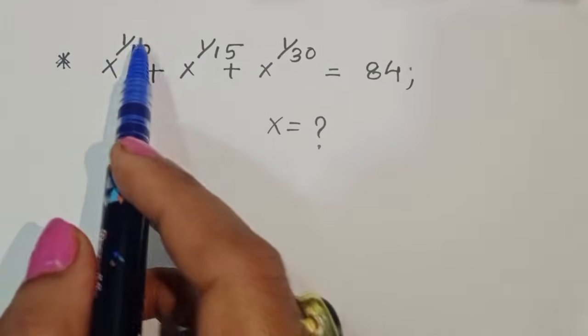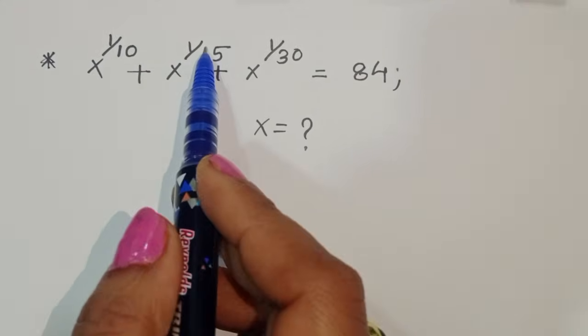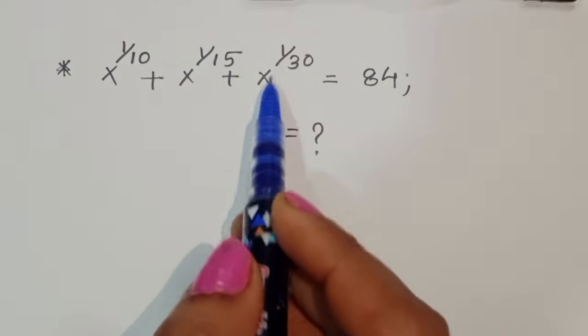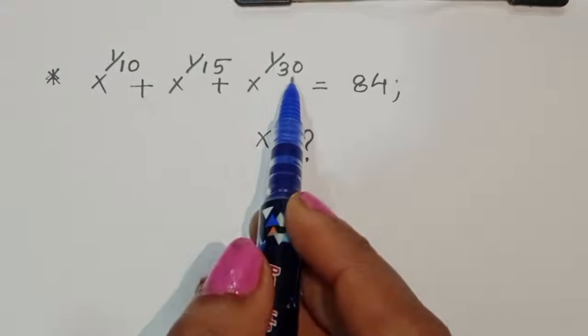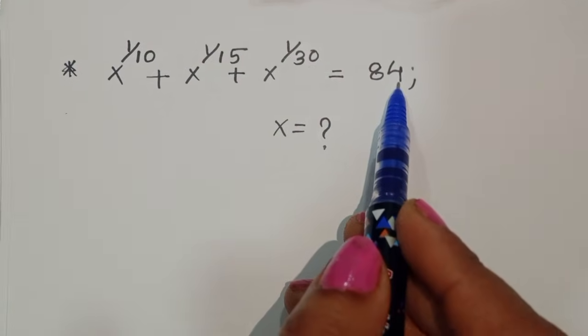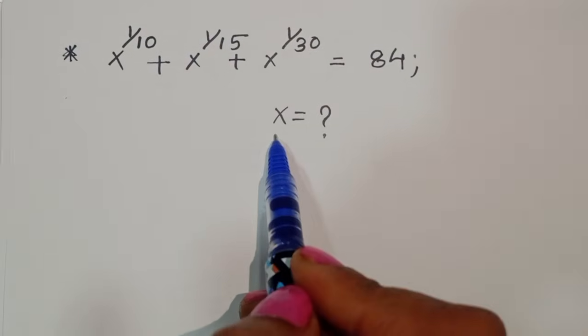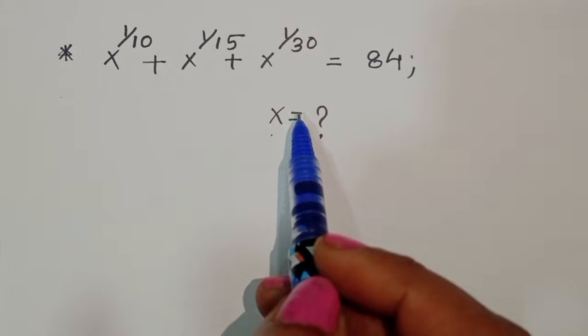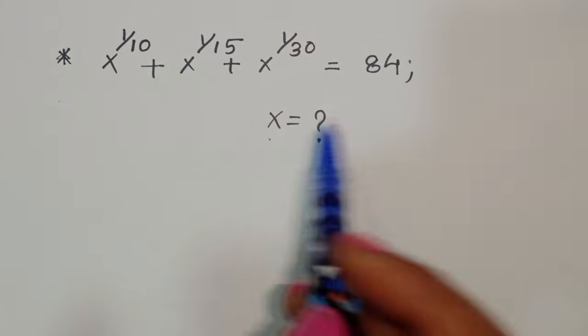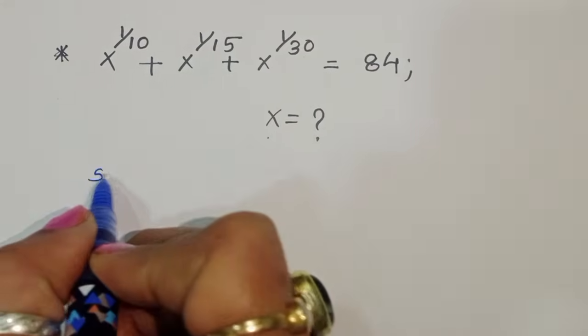When x to the power 1/10 plus x to the power 1/15 plus x to the power 1/30 is equal to 84, we have to find out the value of x. Let's see how we can find out the value of x in this equation.